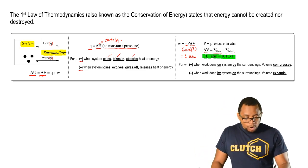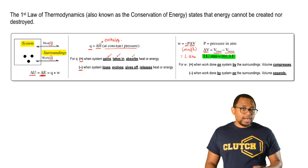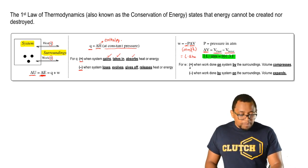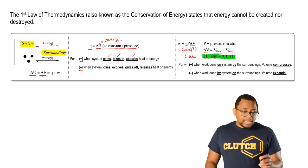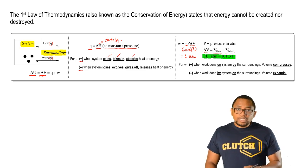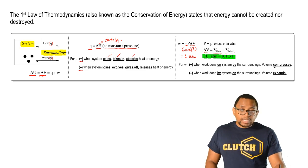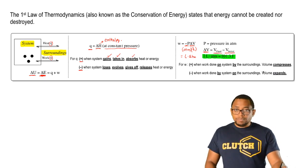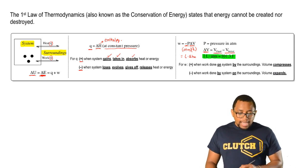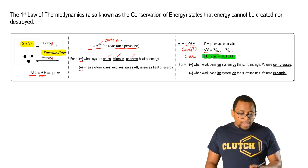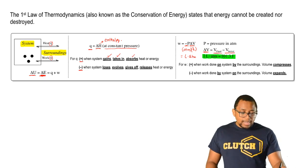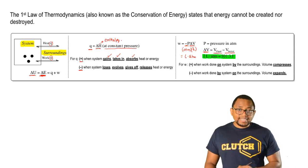Work, just like Q, can be positive or negative. Work is positive when work is done on the system by the surroundings — usually this is accompanied by compressing, where volume is decreasing or being compressed. Work can be negative when work is done by the system onto the surroundings; in this case, volume is expanding.